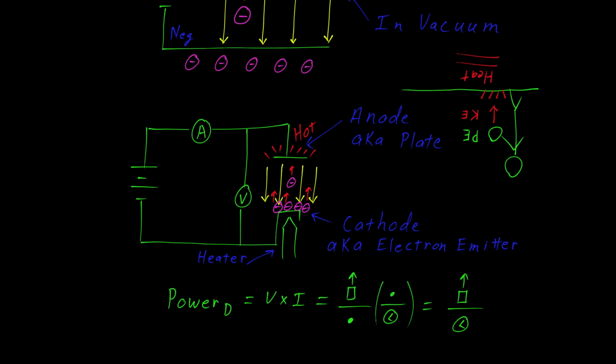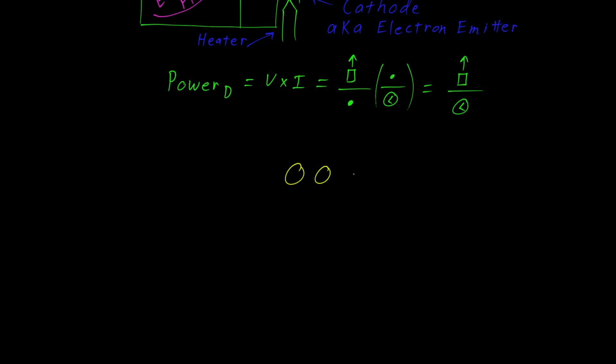At this point, we have a good idea how an electron will behave in a vacuum in the presence of an electric field. Let's make things a little more interesting, and see how electrons behave in a crystal structure.